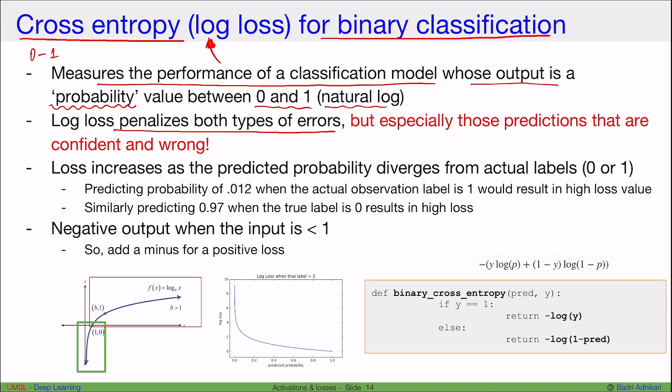Now the cross-entropy loss or the log loss penalizes both types of errors, but especially those predictions that are confident and wrong. So if you're making a prediction and you're wrong but you are confidently wrong, then you have very high loss or very high error for those kinds of predictions.